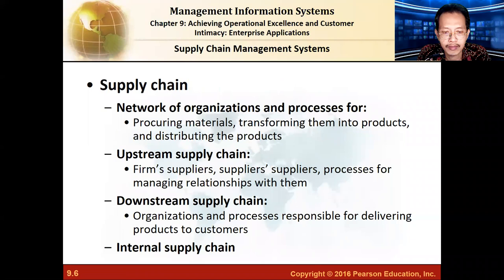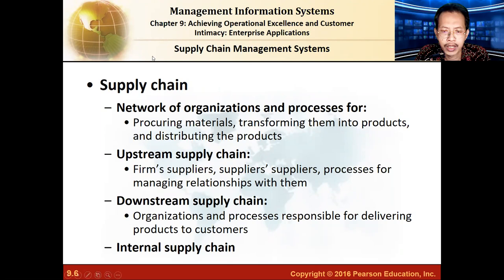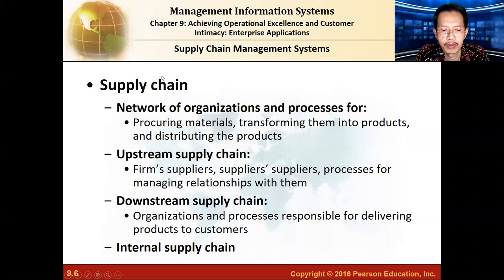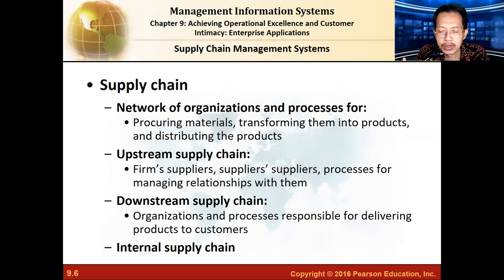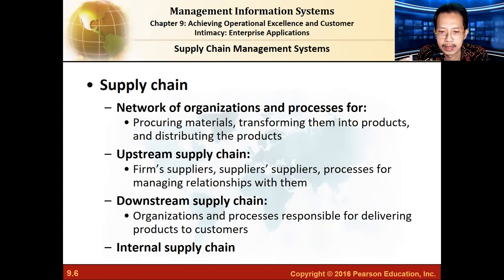Two examples of enterprise systems are supply chain management systems and customer relationship management systems. A supply chain is a network of organizations and processes — it includes suppliers, distributors, retailers, and so on. Business processes can cross over different organizations, connecting you with your supplier or your distributor.